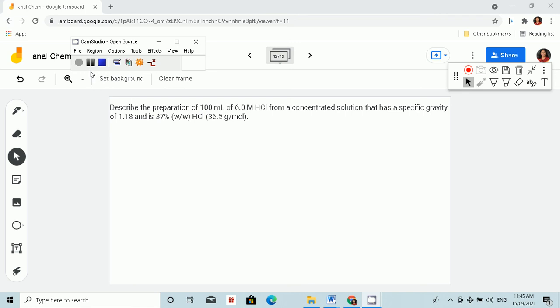Let's have problem 11. Describe the preparation of 100 ml of 6 molar HCl from a concentrated solution that has a specific gravity of 1.18 and is 37% HCl.